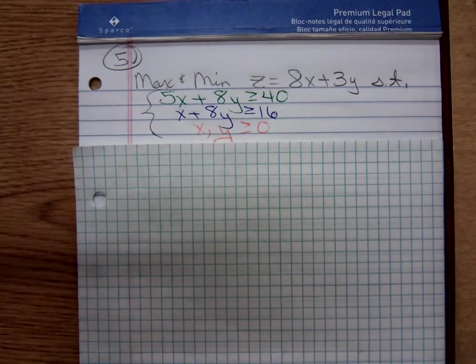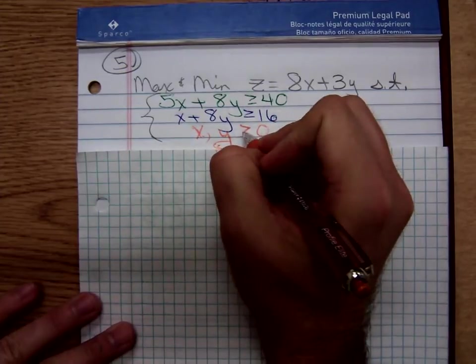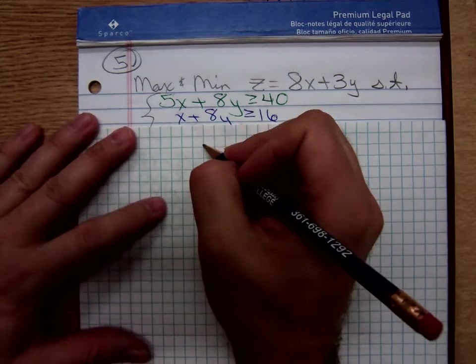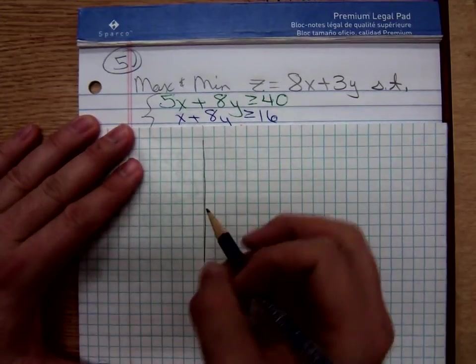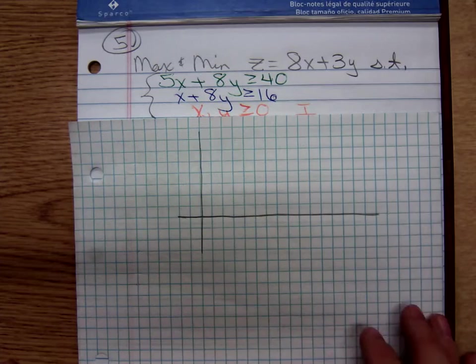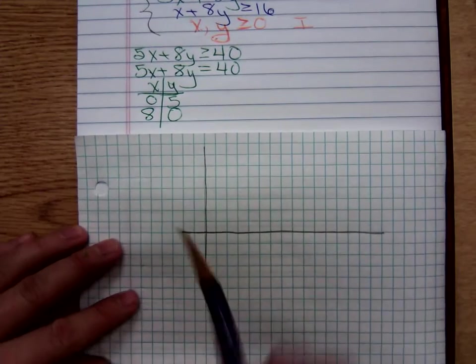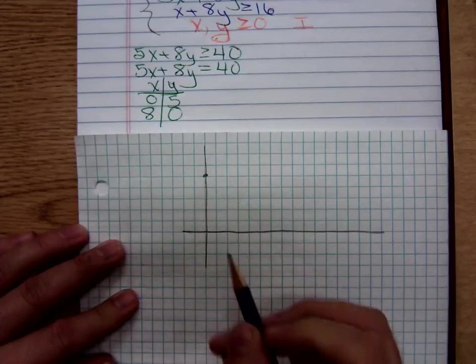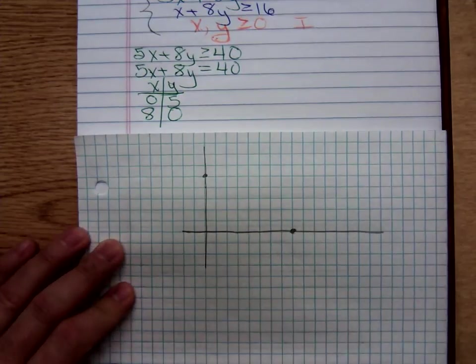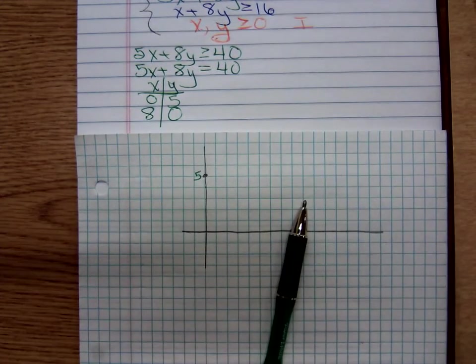So, I'll come over here to my graph paper. Notice we have those non-negativity constraints. It says x and y are greater than or equal to 0. That's saying that we're in quadrant 1. So, I'm only going to draw the grid for quadrant 1. We have 0, 5 and 8, 0. I'm going to make a note that that's 5, that's 8. I draw my line.